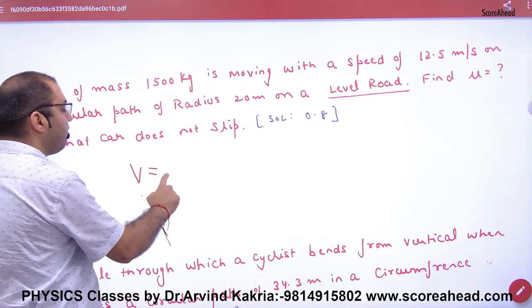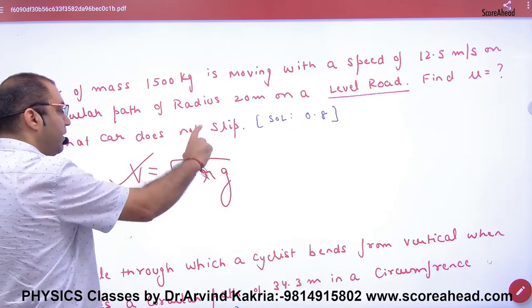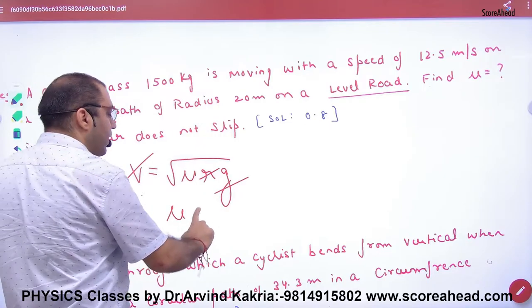You will apply mu. V is equal to under root of mu rg. You know v, r and g.